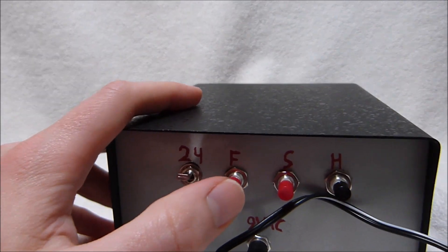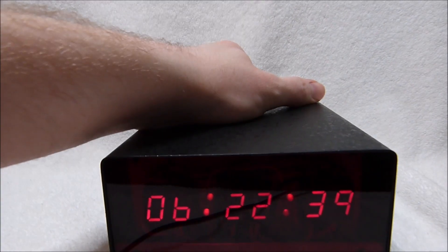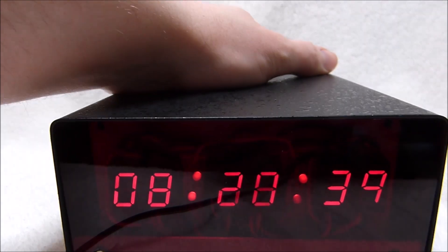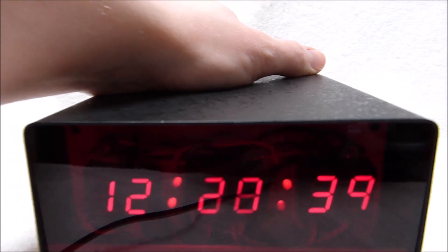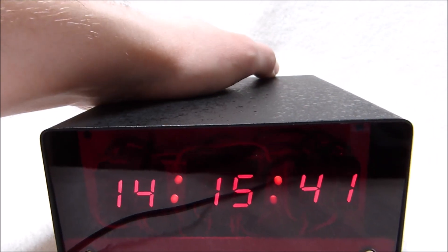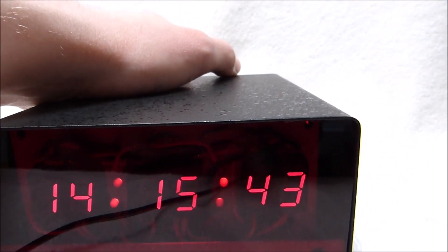The other controls here are the fast set, slow set, and hold. The fast set button rapidly advances the minutes and holds the seconds. And the slow set button rapidly advances the seconds.